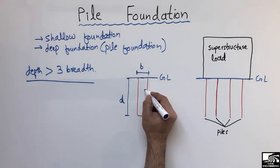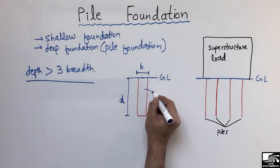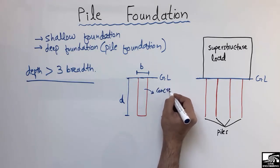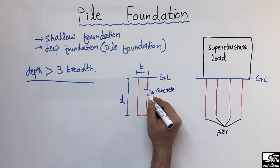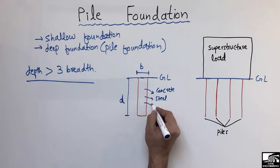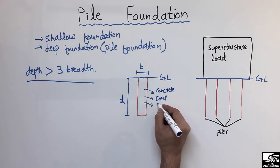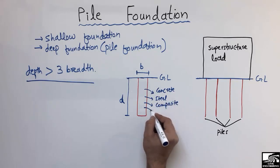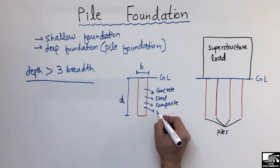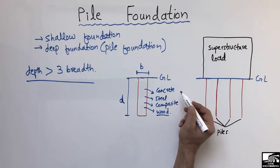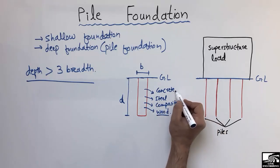The materials that can be used in piles are different. For example, concrete can be used, or the pile can be made of steel. The pile can also be made of both steel and concrete, which we call a composite pile. Or the pile may be a wood pile, though this is not commonly used. The most commonly used pile is the concrete pile.